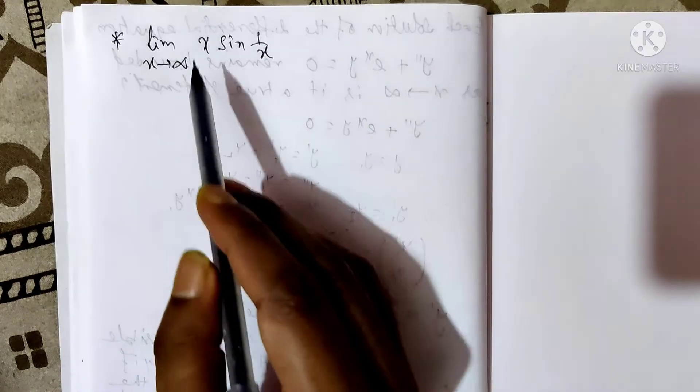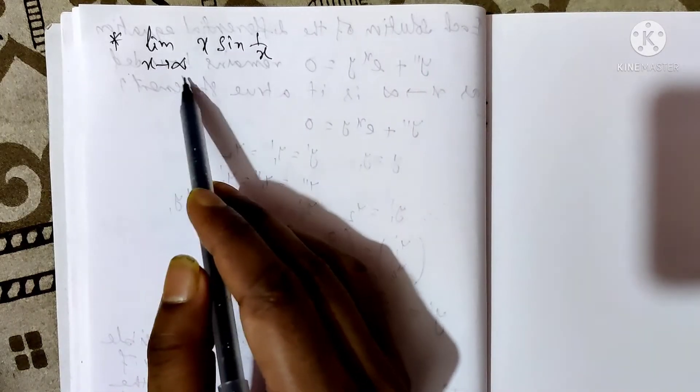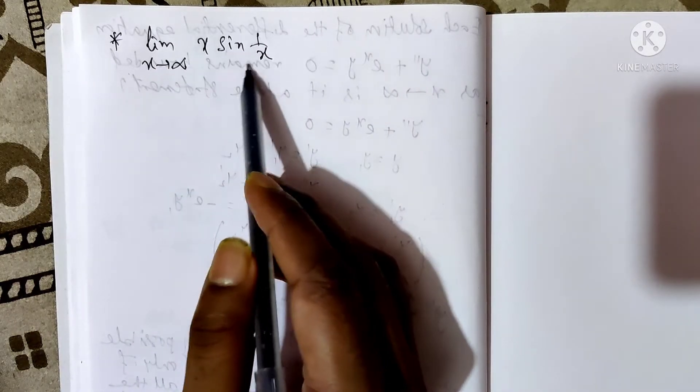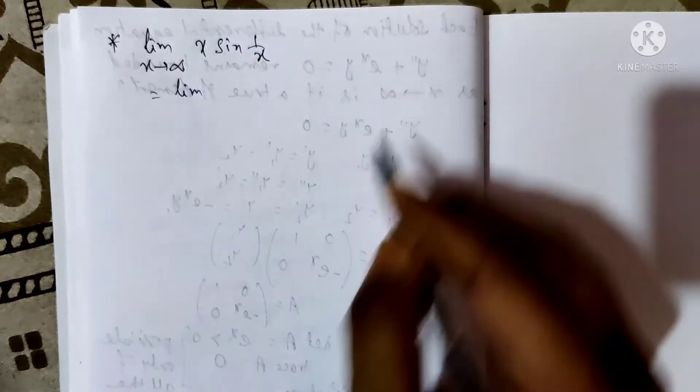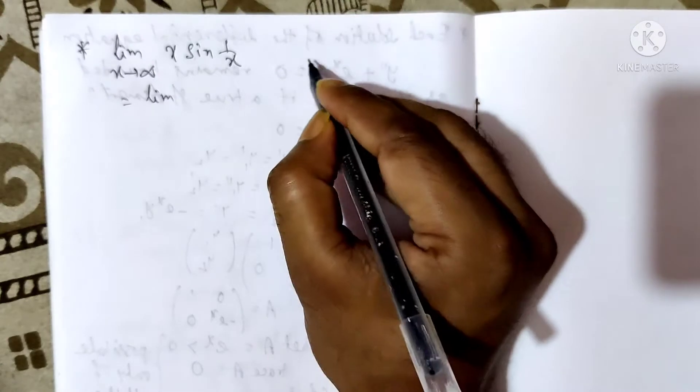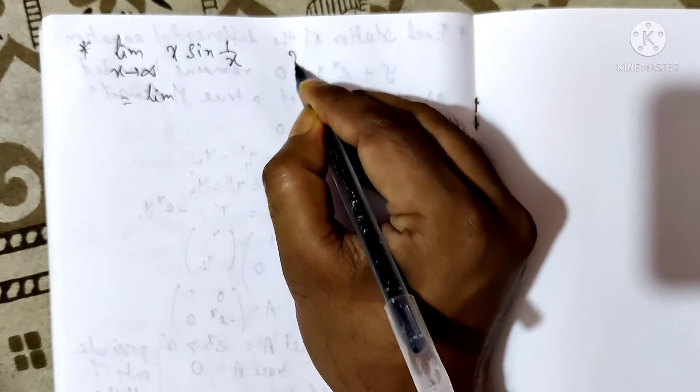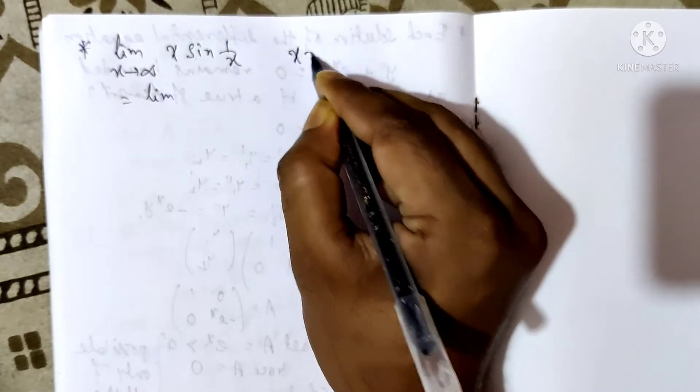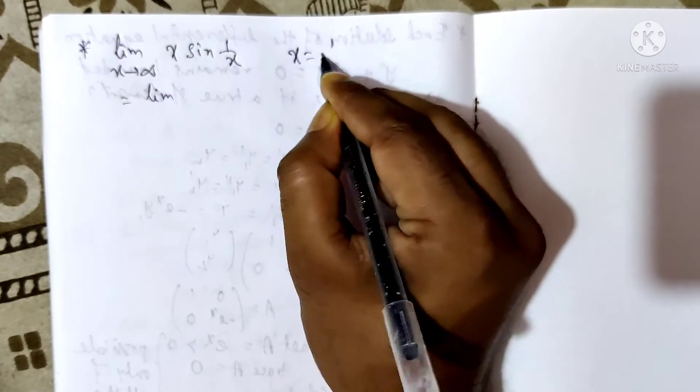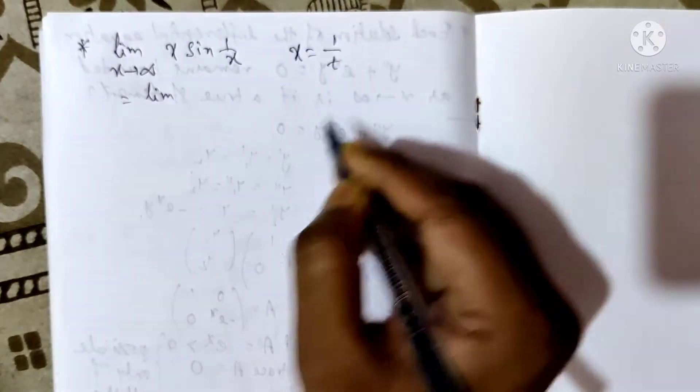Let us evaluate the limit: limit as x tends to infinity of x·sin(1/x). Let us take x equals 1 by t.